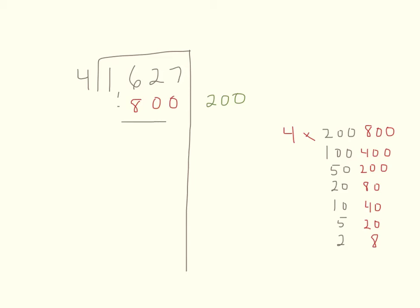Once I've done that, I subtract — subtracting correctly is very important. My next number to check is 1227. Looking at my chart again, 800 works again, so I write 800 as my next multiple and 200 as the next partial quotient on the right side, then subtract. 12 minus 8 is 4, so I have 427 left to divide into 4 groups.